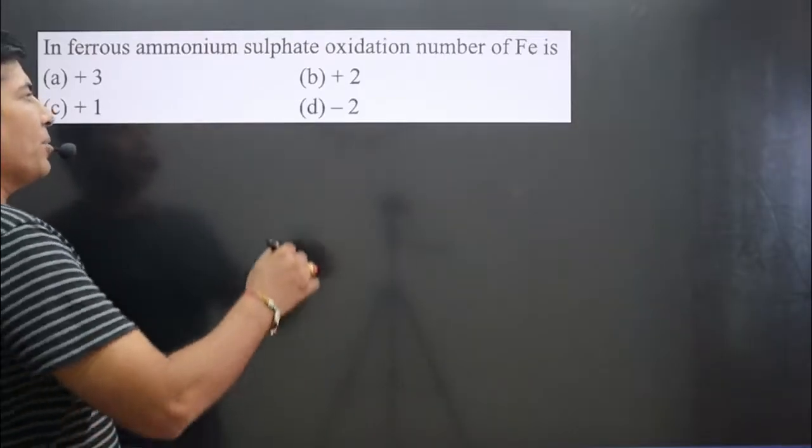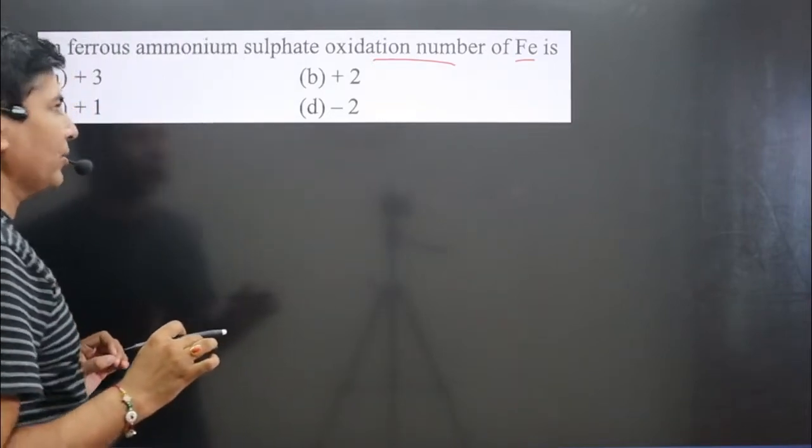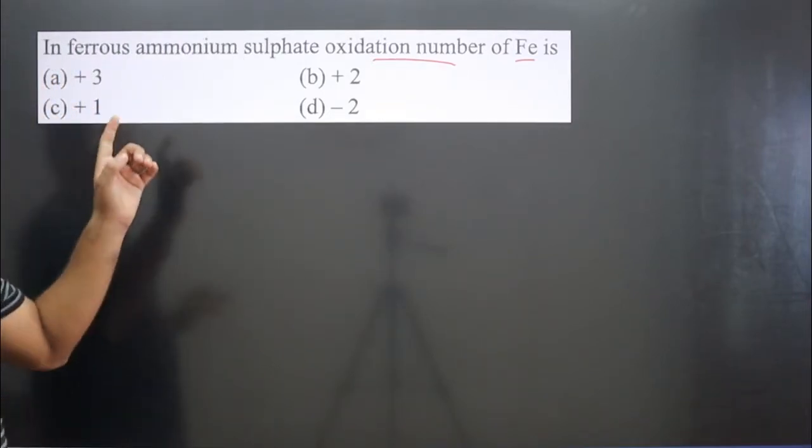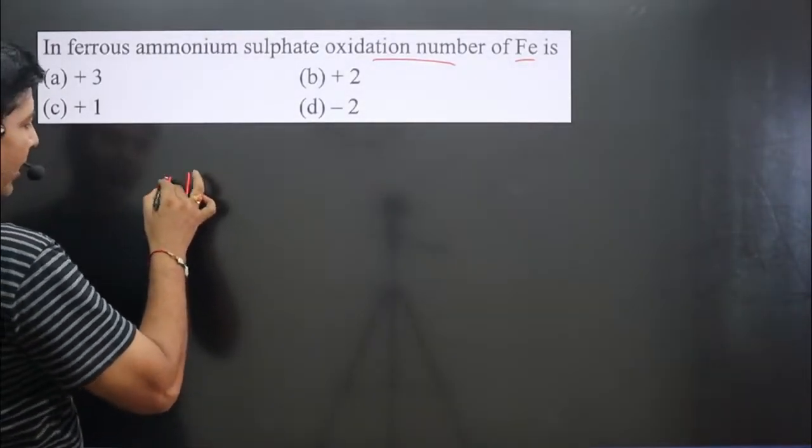The question says in ferrous ammonium sulfate, oxidation number of iron. You can do this question only when you know the chemical formula of ferrous ammonium sulfate. It is Mohr's salt. Its chemical formula is (NH4)2